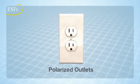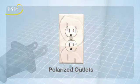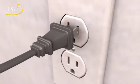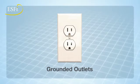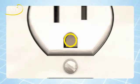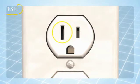Polarized outlets have two vertical slots of different sizes making it difficult to insert a plug the wrong way. Grounded outlets have a round hole for a grounding conductor in addition to the two vertical slots.